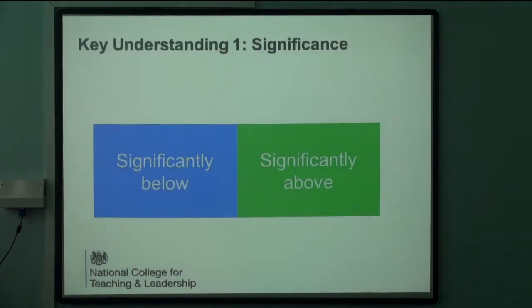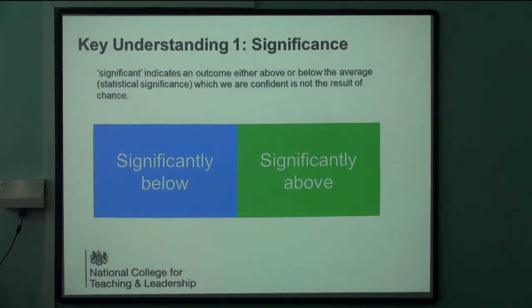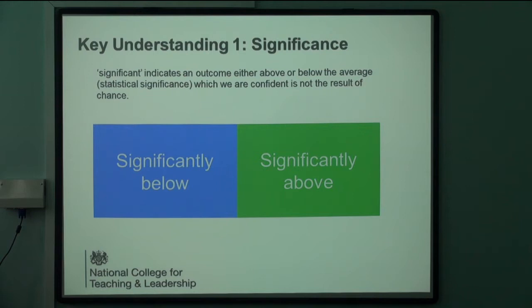In terms of getting started with RaiseOnline, the simplest way of looking at this is that there are two colours: blue, which is not good, and green, which is good. They use the word 'significant' and define it by saying it's confident that it's not the result of chance — so it's something about what the school is doing or not doing that is leading to performing significantly above or significantly below the national.